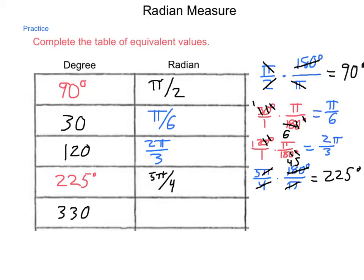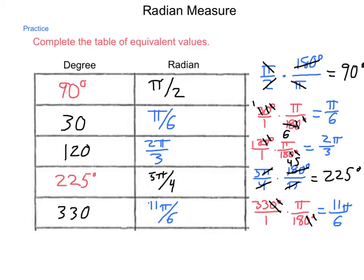For 330 degrees: 330 degrees times π over 180 degrees. The degrees simplify, multiples of 10 simplify, giving us 33/18. Both are multiples of 3, so simplifying gives us 11/6. So we have 11π/6 for the value of 330 degrees. Using either 180/π or π/180, we can convert back and forth between degrees and radians.